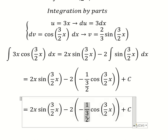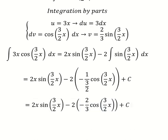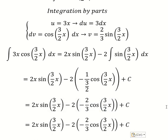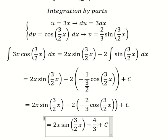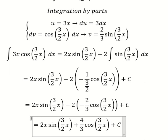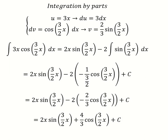Simplifying, we have 2/3, which gives us 2x sine of 3/2 x minus 2 times negative 2/3 cosine of 3/2 x plus C. This is the final answer. Thank you for watching.